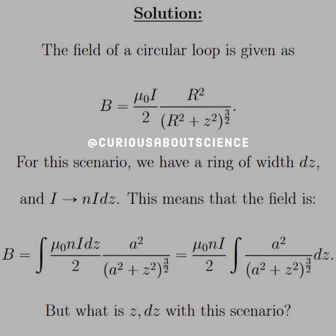So the field of a circular loop is given as B equals mu not I over 2 times R squared divided by R squared plus Z squared to the 3/2 power. That's how we work with the script R, same thing we did with the electrostatics. But for this scenario, we know that the ring is of width DZ, and thus the current is going to be n times DZ times I.